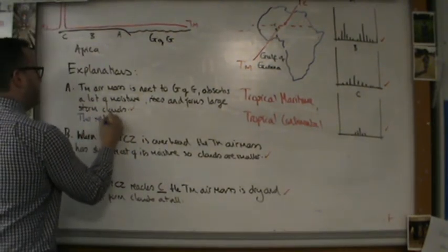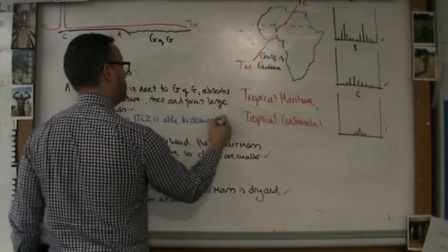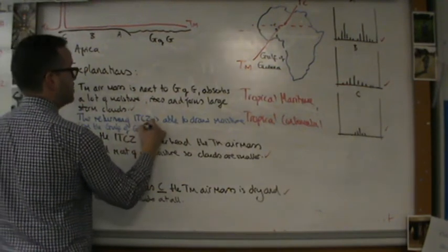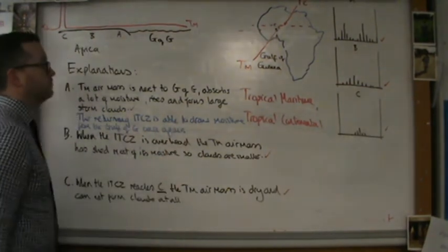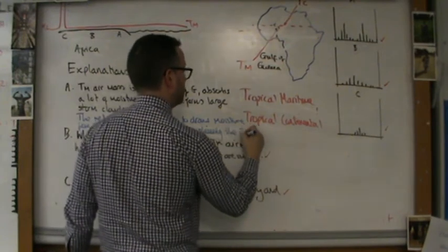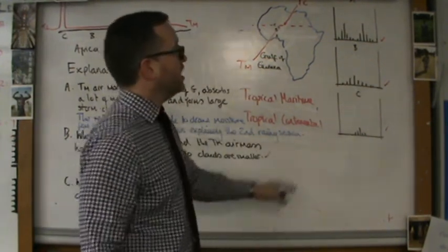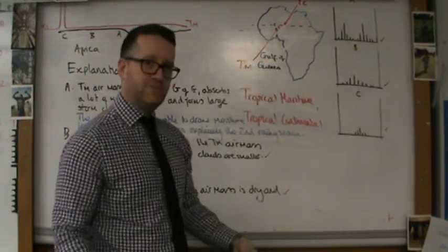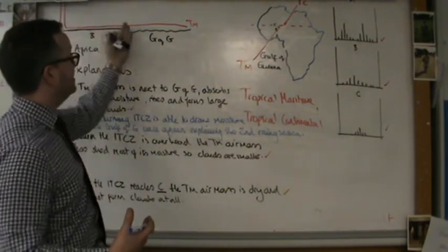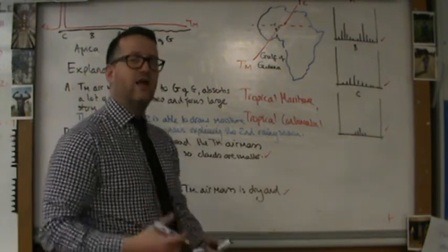So let me show you how to do that now. For location A, the returning ITCZ is able to draw moisture from the Gulf of Guinea once again, explaining the second rainy season. Location A has two rainy seasons, and the second season that you see here is explained by the ITCZ returning south to location A. At that point, the tropical maritime air mass is then firmly over the Gulf of Guinea. It's able to draw in more moisture, it's able to create those large clouds again, and so you get a second rainy season.